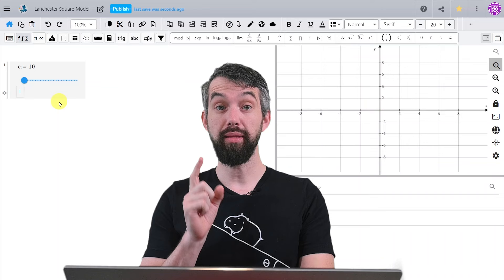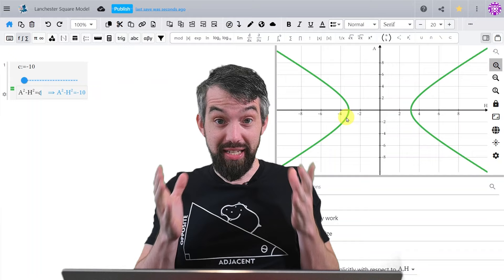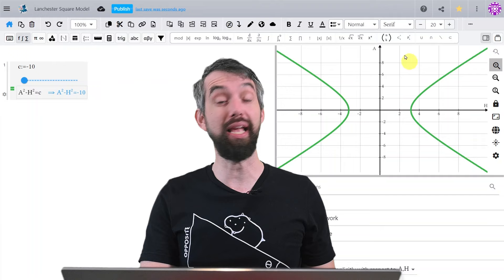Let's try to graph this. I'm going to write A squared minus H squared. And this is going to be equal to a value of the constant. And what we see is this graph. This is the graph of a hyperbola. I have H as my horizontal axis and A as my vertical axis.